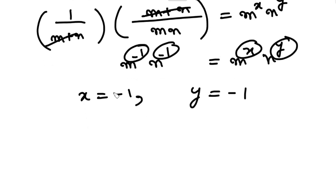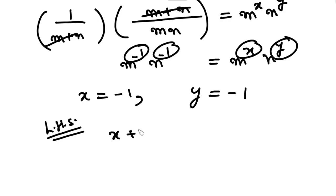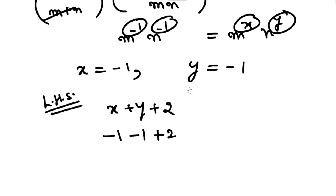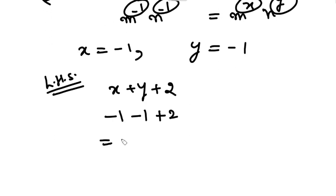On comparing, the value of X is minus 1 and the value of Y is also minus 1. Now considering the left-hand side of the result we need to prove: that is X plus Y plus 2. Substituting the values: X is minus 1, Y is minus 1, so the result is 0, and this is what we had to prove.